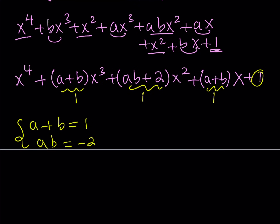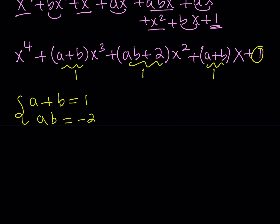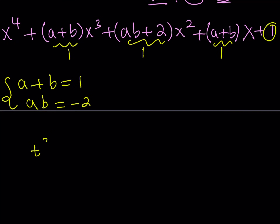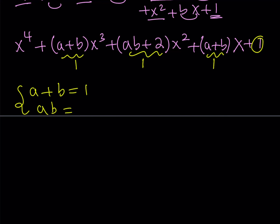This tells us that a and b are the roots of a quadratic equation. Using Vieta's formulas, we can write that as t squared minus the sum of the roots (which is one) times t minus the product (which is negative one) equals zero — wait, actually ab equals negative one, so the quadratic is t squared minus t minus one equals zero.